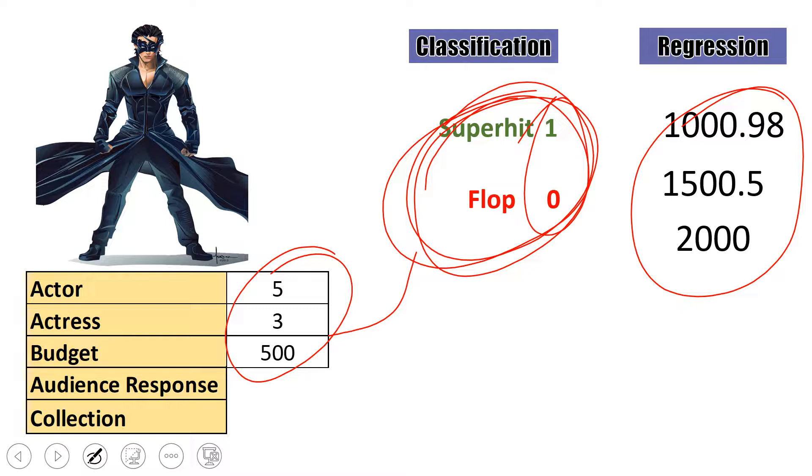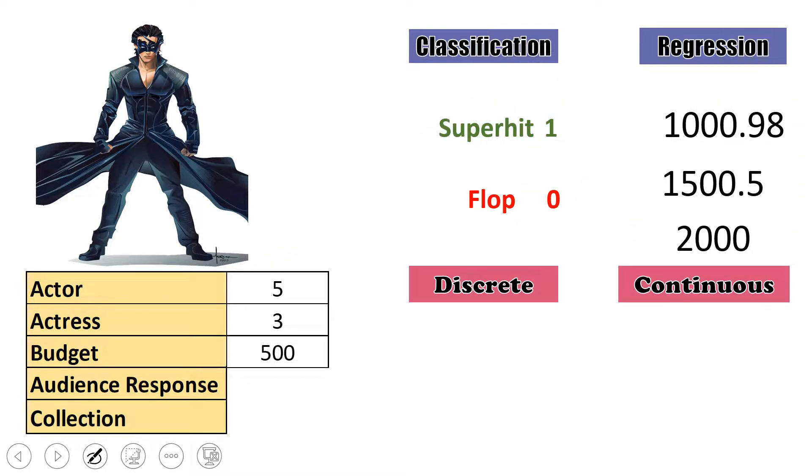So the moral of the story is classification would have discrete output, and regression prediction will have continuous numbers. You notice over here, this discrete is classification, and it is continuous so it is a regression problem. I just hope that it is clear.